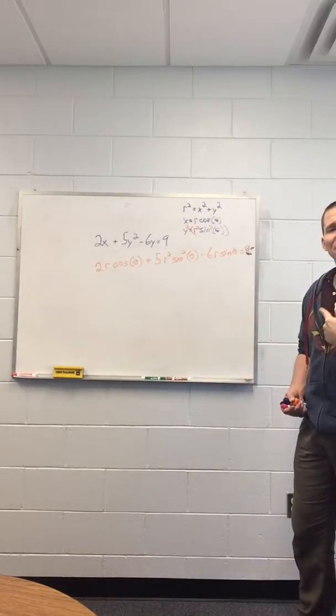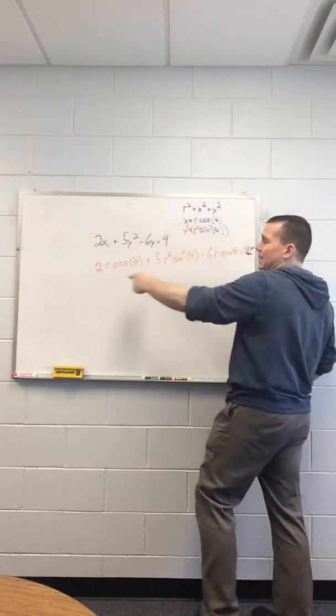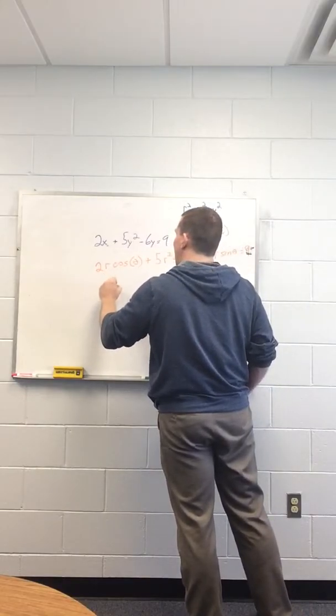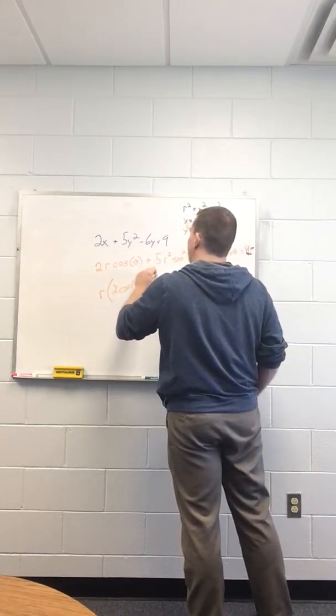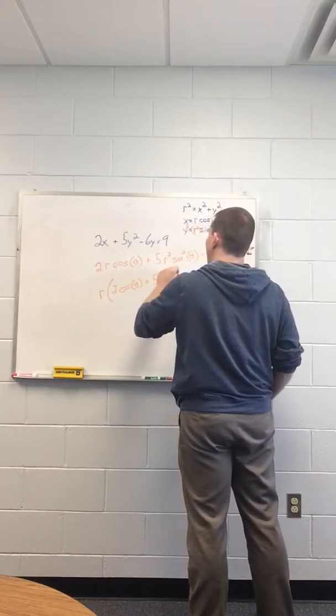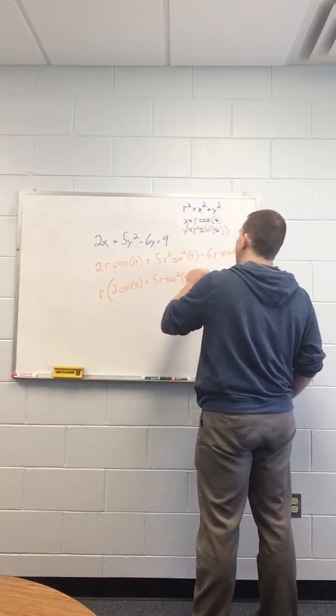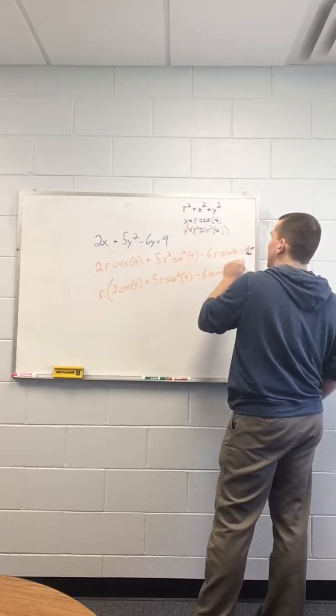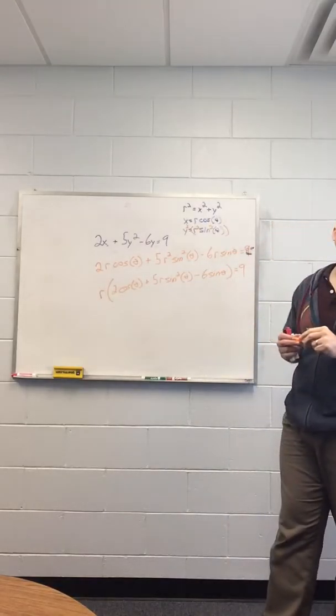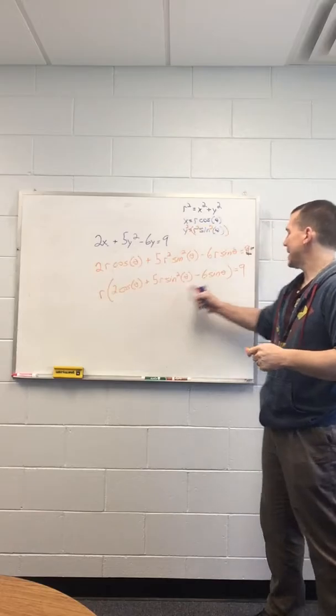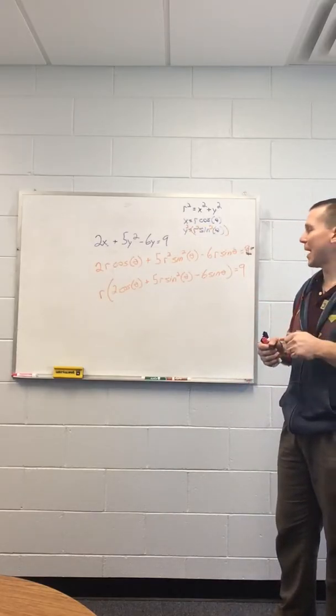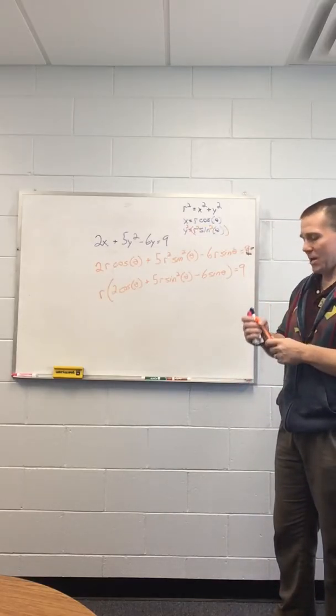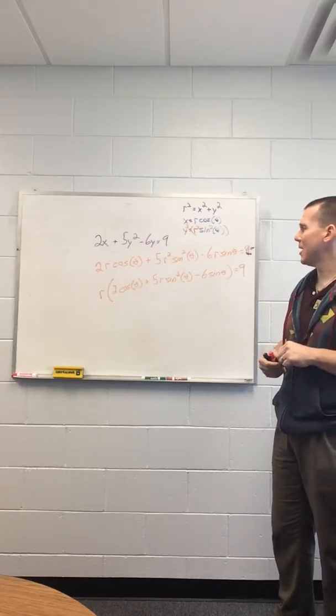I was fine if you left it like that. A bunch of people factored it out. So you've got R times 2 cosine theta plus 5R sine squared theta minus 6 sine theta equals 9. Other people then divided this whole term over there. I was fine with whatever you actually did. I want to say for the most part, people did okay on it.